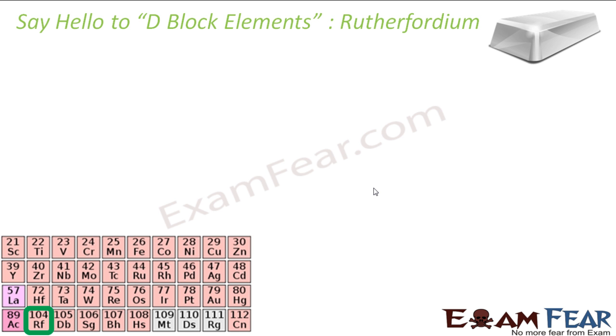The next element is Rf, that is rutherfordium. I'll just skip it fast because not much use of these. Rutherfordium was discovered pretty late, 1960, by Russia and California. This IUPAC name rutherfordium was given in honor of Rutherford, the famous chemist.